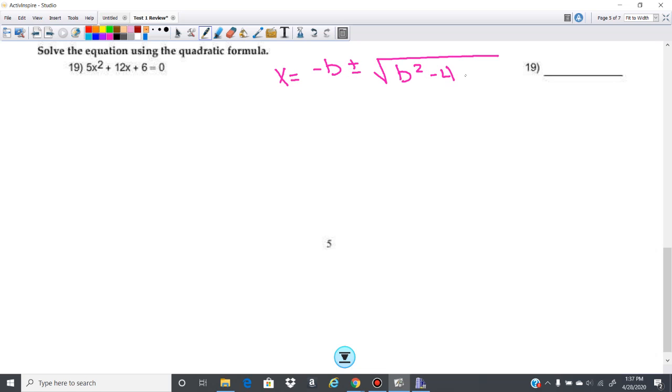b squared minus 4ac over 2a. And that, of course, is in an equation in the form ax squared plus bx plus c.